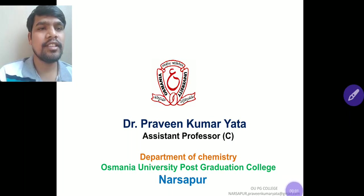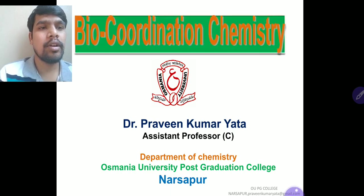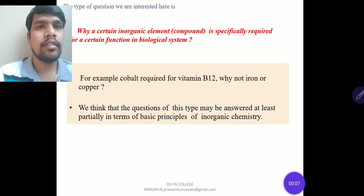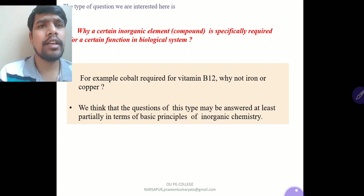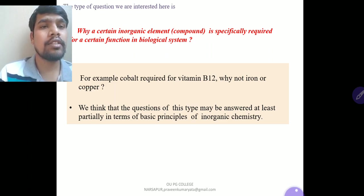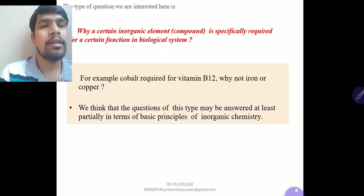Good morning students. Welcome back to this part on bio-coordination chemistry. The type of question we are interested in here is: why is a certain inorganic element specifically required for a certain function in a biological system? For example, why is cobalt required for vitamin B12, and not iron or copper? We think that questions of this type may be answered, at least partially, in terms of basic principles of inorganic chemistry.